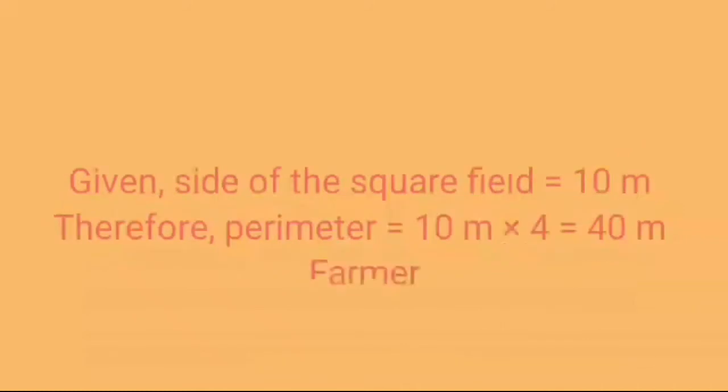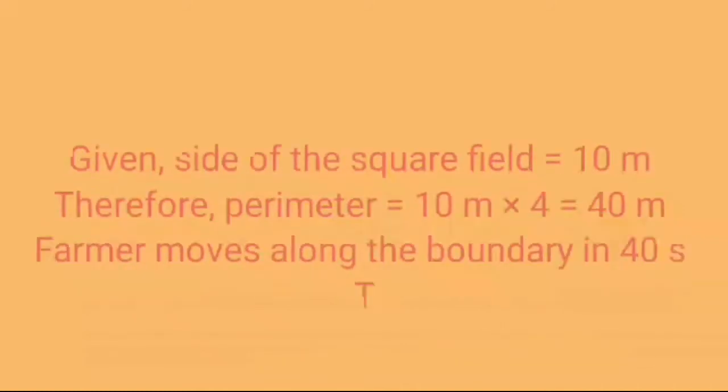Given side of the square field is equal to 10 meter. Therefore perimeter will equal to 10 into 4 which will equal to 40 meter.